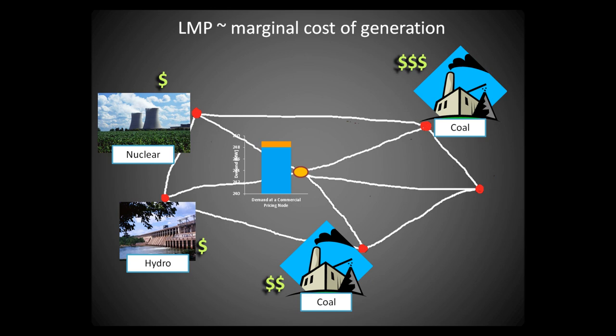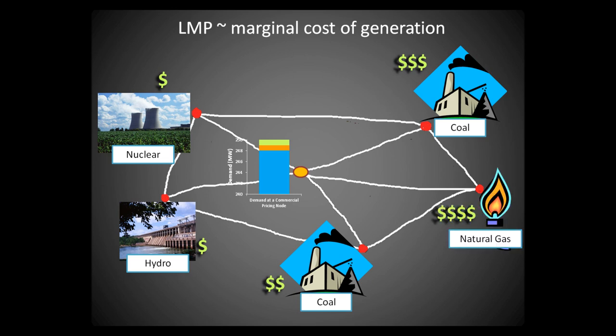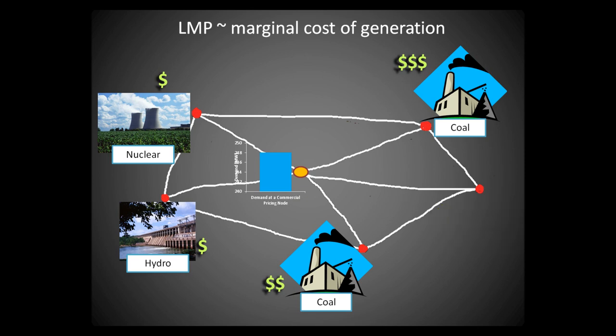Now let's say there is another increase in demand. Maybe the marginal generator is already at max capacity or cannot increase its power output quickly enough. In this case, a new generator may be brought online. This is the new marginal unit — any change in demand will affect the output of this generator. If demand dropped back down to the original level, the gas generator would likely be shut down, and the coal unit would be the marginal generator once again.